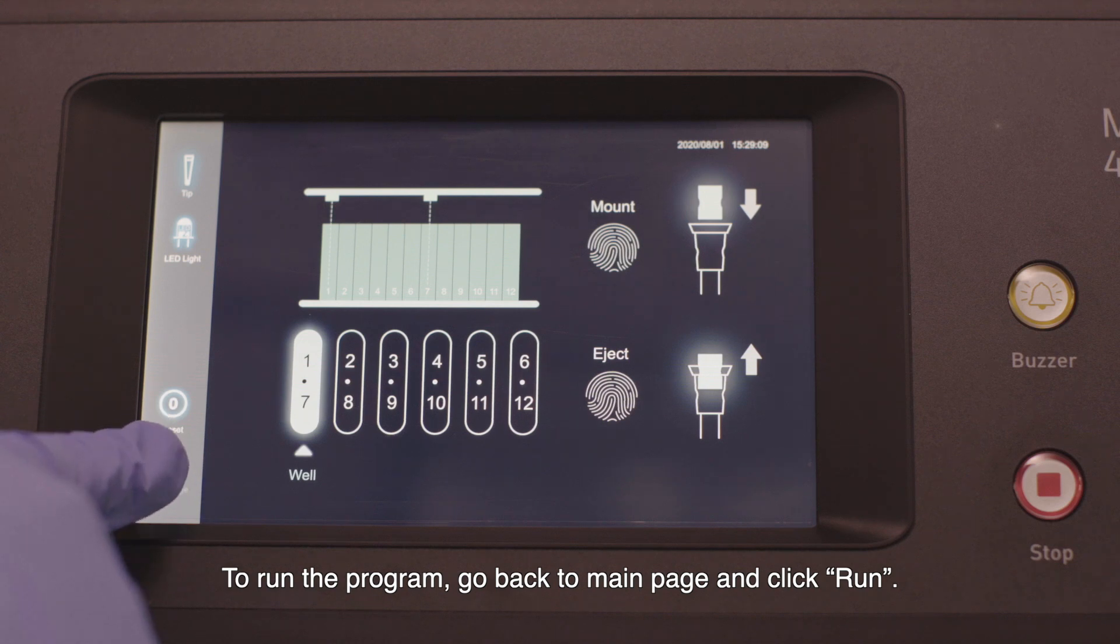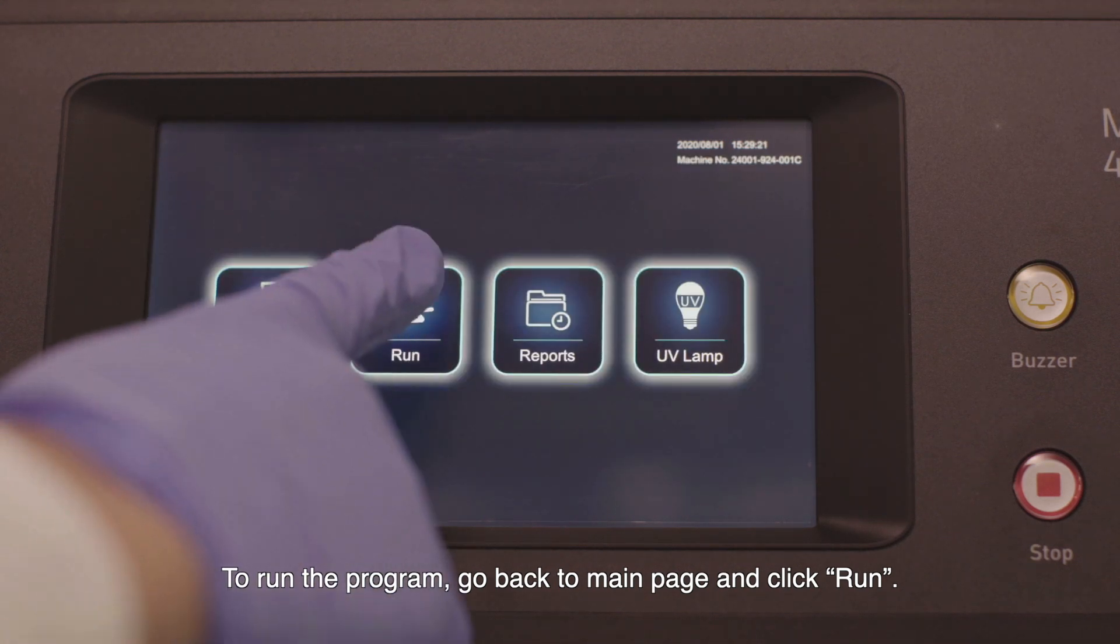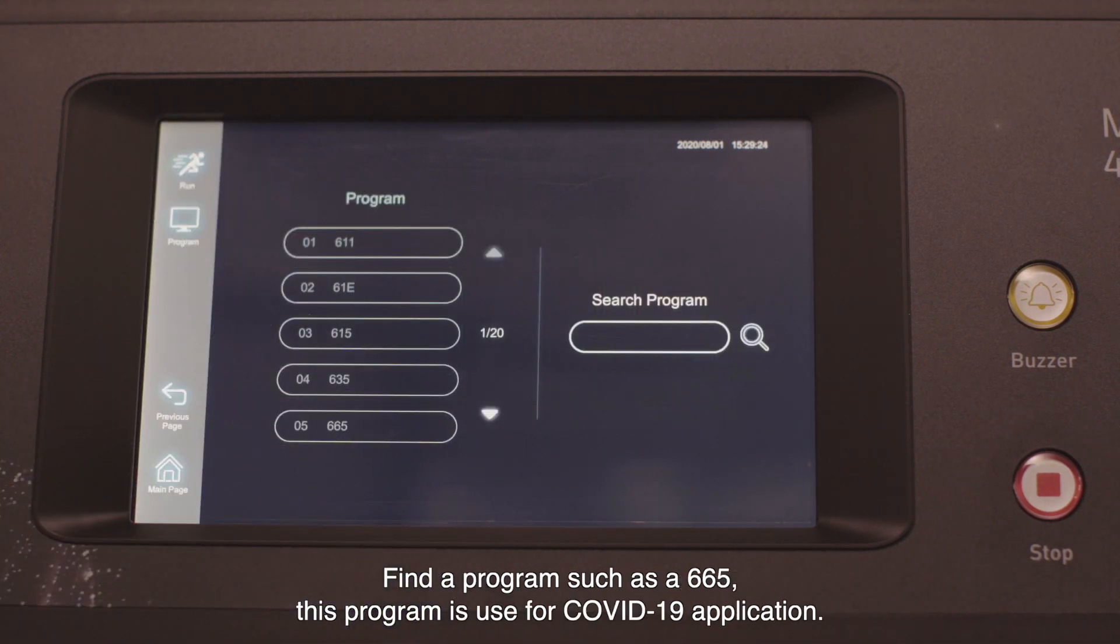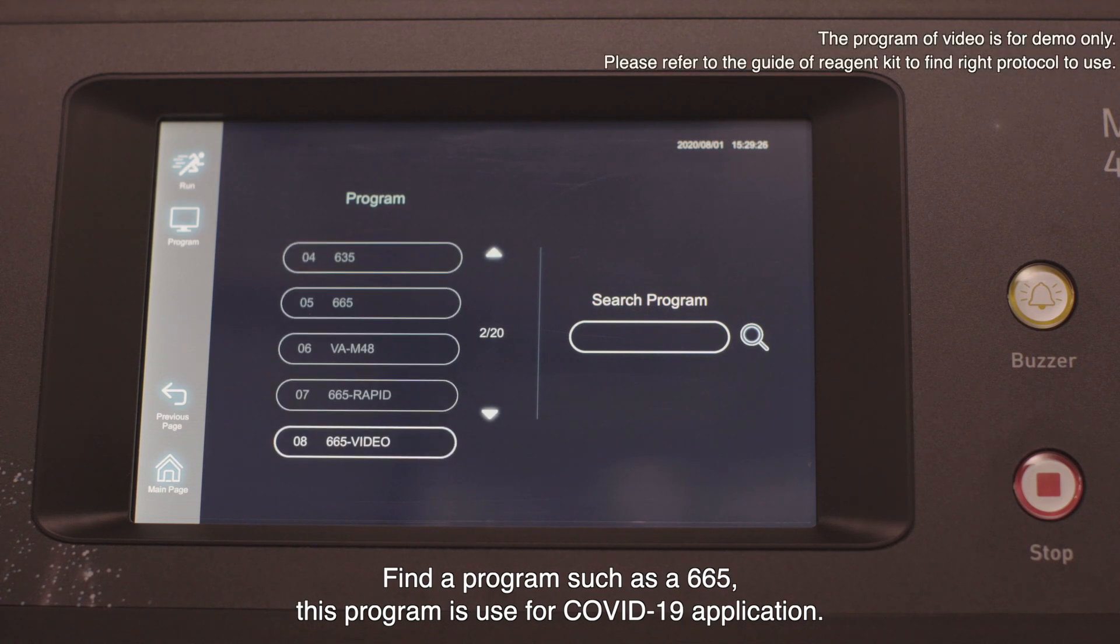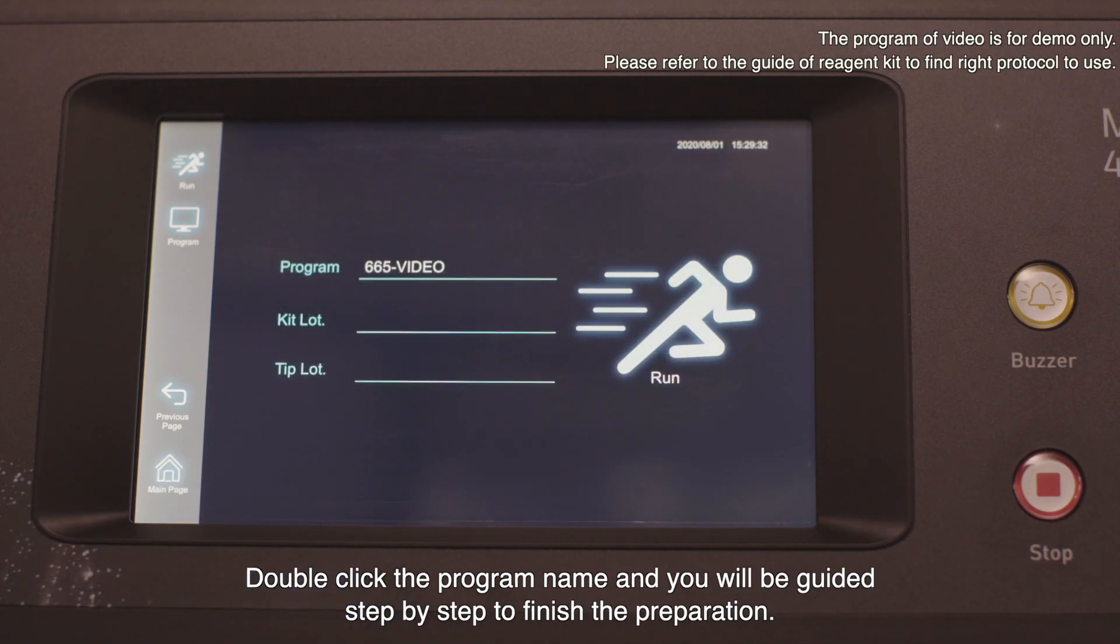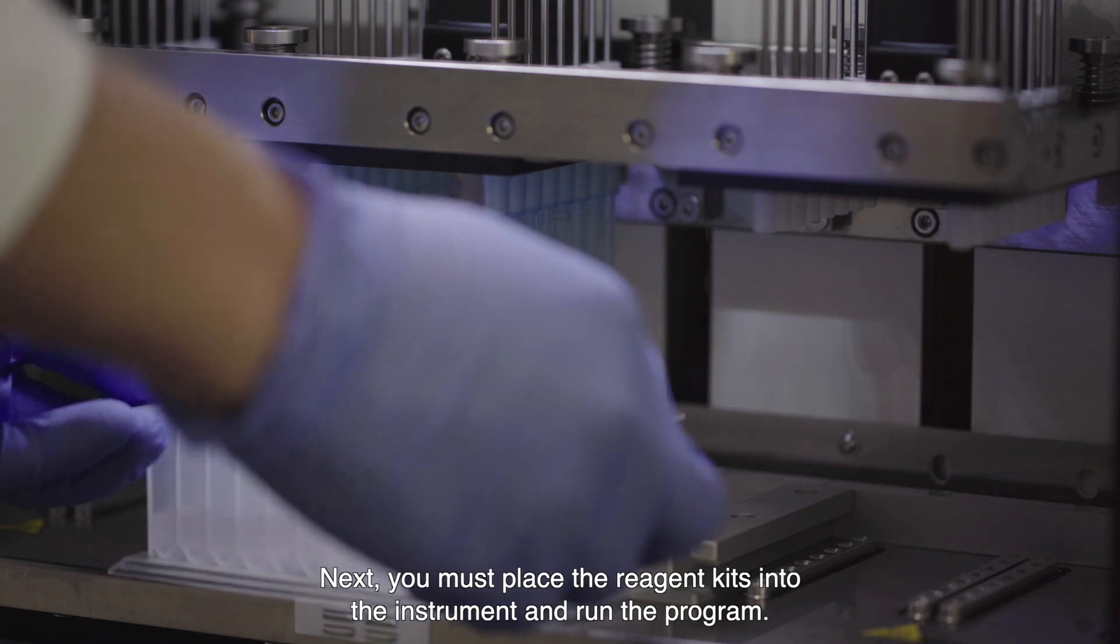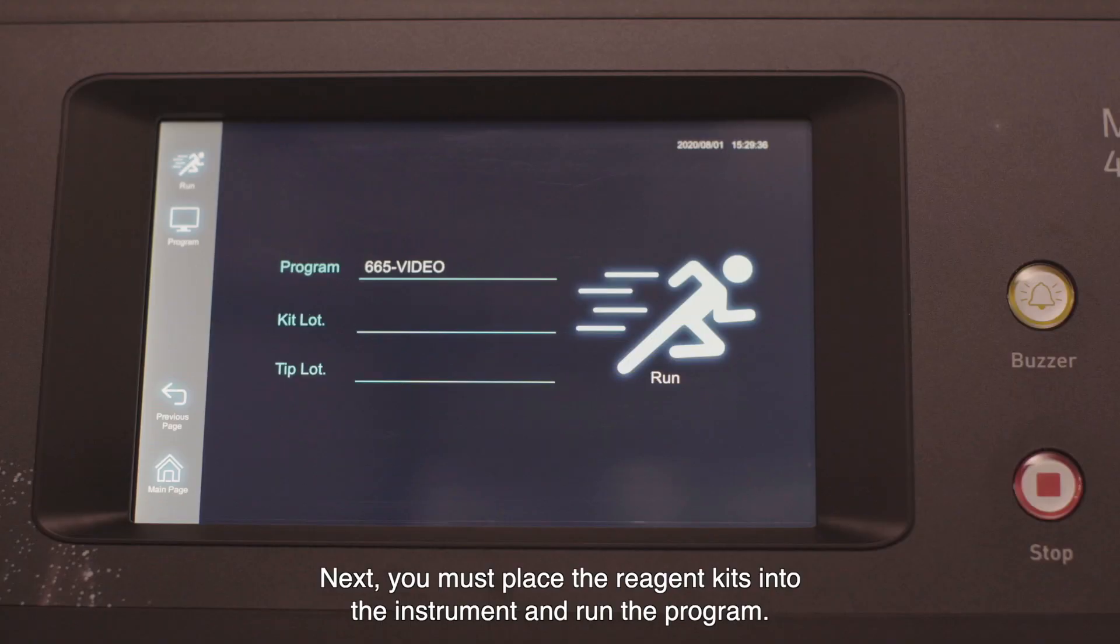To run the program, go back to the main page and click run. Find a program such as the 665. This program is used for COVID-19 application. Double click the program name and you will be guided step by step to finish the preparation. Next you must place the reagent kits into the instrument and run the program.